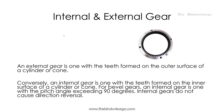Internal and external gears: an external gear is one with the tooth form on the outer surface of a cylinder or cone. Conversely, an internal gear is one with the teeth formed on the inner surface of a cylinder or cone. An internal gear is one with a pitch angle exceeding 90 degrees. Internal gears do not cause direction reversal.